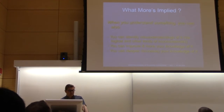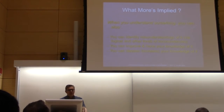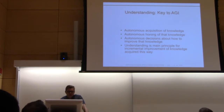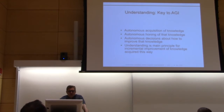I think this is a critical thing that AGI really needs to take seriously — the ability to deepen one's knowledge. In AGI, we assume that a true AGI system is capable of autonomous knowledge acquisition, autonomously honing and improving that knowledge, and making autonomous decisions about what knowledge is insufficient for what purpose. Understanding, it turns out, is a main principle for how you improve knowledge acquired in this way.